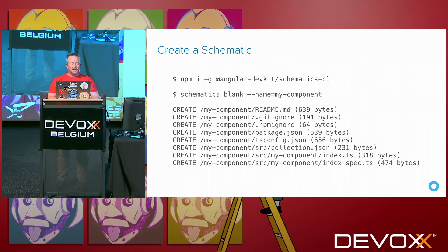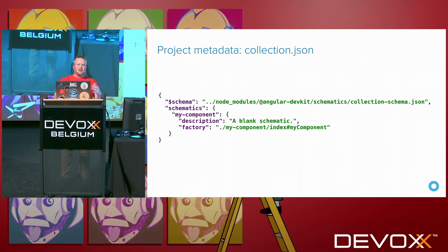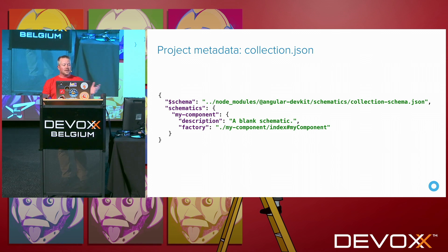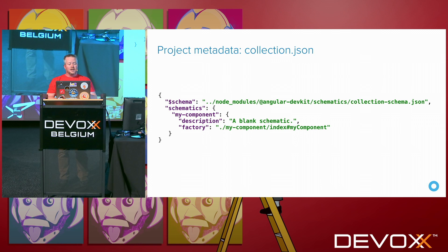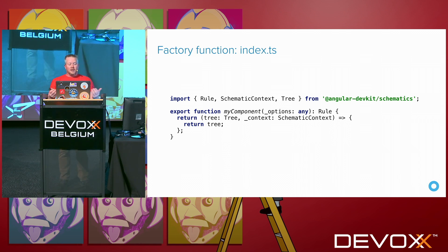In that collection.json is where you define how everything fits together. It uses JSON schema to define the attributes you can have. You'll notice there's a factory — that factory is the key element that points to where your code is. In this case it points to my-component's index.ts and the my-component function. If you crack open that index.ts, you'll see it has that my-component function with really nothing in it.